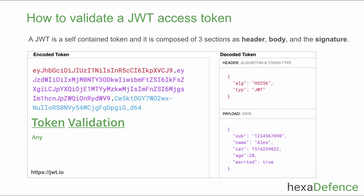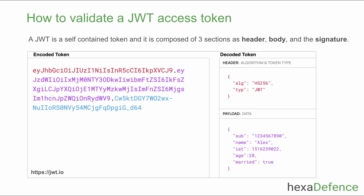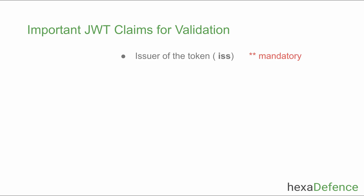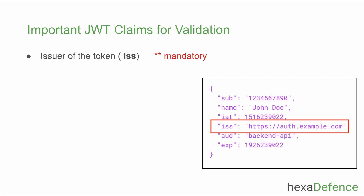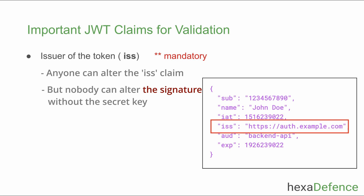When it comes to token validation, you can use any number of claims to validate the token as your application requires, but there are some mandatory attributes. The most important claim is the issuer — this validation is mandatory. You can see the issuer name in the 'iss' claim. The backend API fully trusts the issuer, so any token coming from that issuer is trusted. You should validate whether the token was generated exactly by the issuer mentioned in the 'iss' claim, because anyone can generate a JWT token by adding an issuer name. Therefore, to validate the issuer, it is mandatory to also validate the signature of the token.